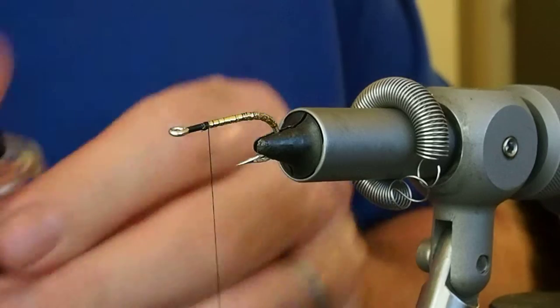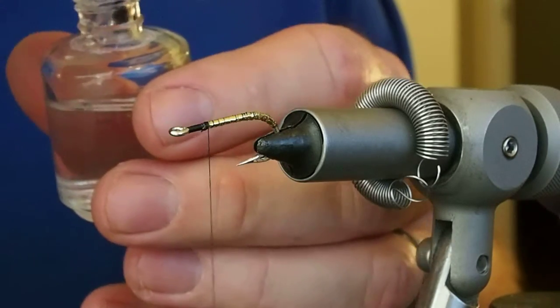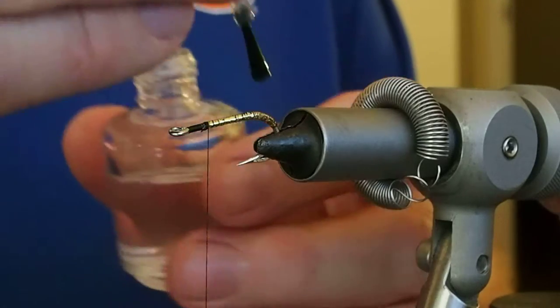And again, I'm just going to hit it with a little more Sally Hansen's just to protect those wraps. Mylar is fairly delicate.